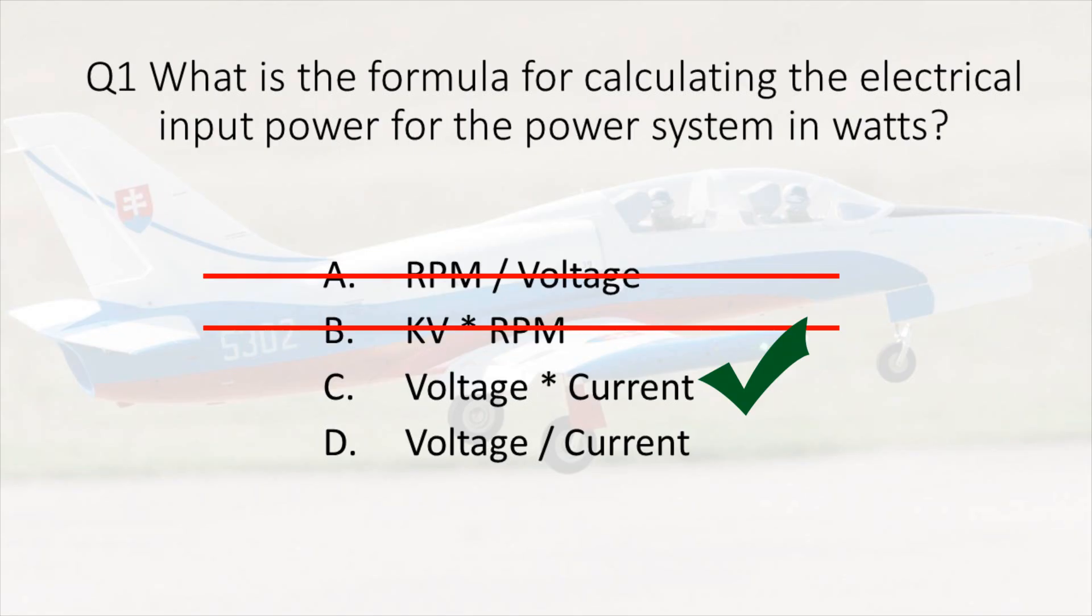Answer C is voltage multiplied by current. This is in fact the correct answer. We take voltage and multiply it by current, we get power in watts. This is not just for brushless power systems, this is for any electrical system. And answer D, voltage divided by current, that's not going to give us power in watts. So let's move on to our next question.